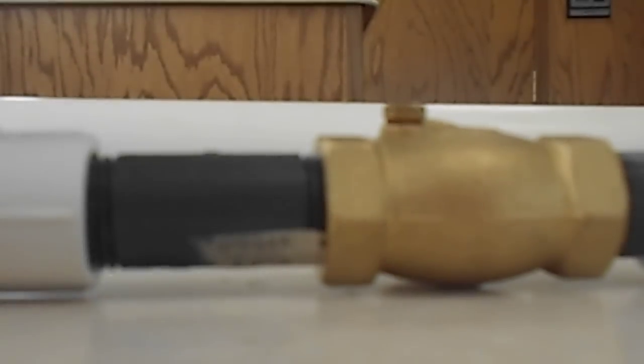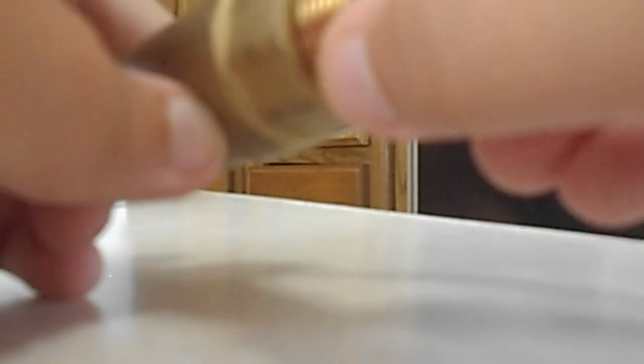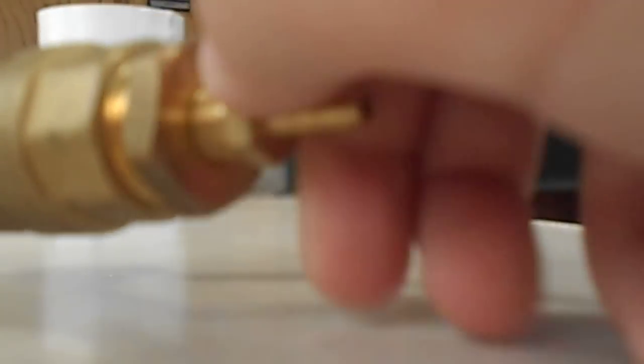Now you're going to take your half inch thread to eighth inch thread reducer and we're going to screw that in. So now we're going to take our eighth inch thread to barb and screw that into the reducer.